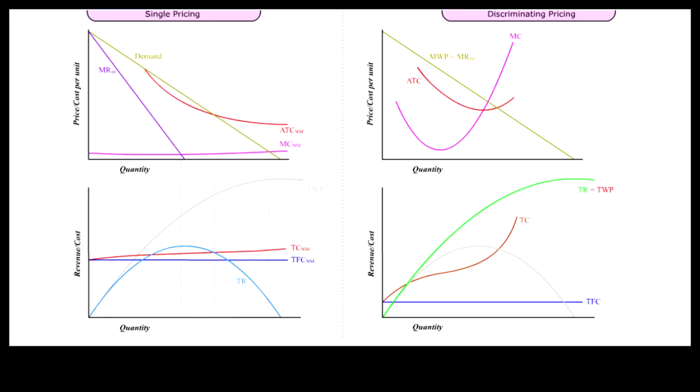With these two sets of cost curves, we can now compare profit maximization under single pricing versus perfect price discrimination. The single pricing monopolist will maximize profit by setting MRSP equal to MC.